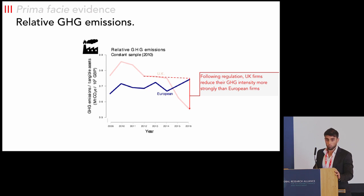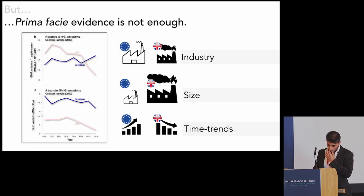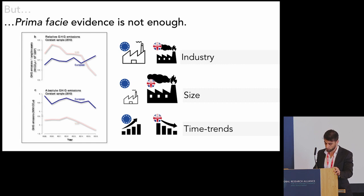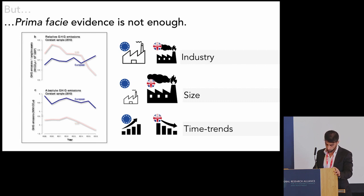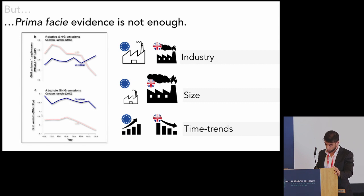You might wonder whether other things explain these three graphs. For instance, industry composition — it might be that a large industry in the UK drives emissions down. There might be differences in firm size, such that it's easier for them to reduce emissions. Or it may simply be long-term time trends — that the reduction in UK emissions is the result of a pre-existing steady decrease.